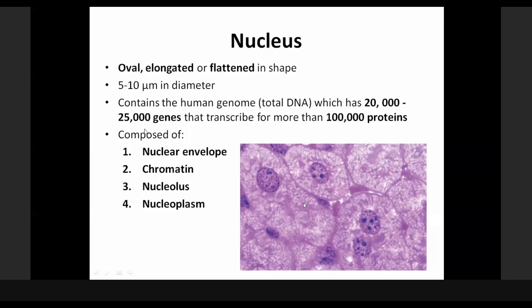In our nucleus, we have an estimated number of about 20,000 to 25,000 genes, made by a series of base pairs of DNA transcribing for more than 100,000 proteins. Because the nucleus contains so much DNA material coding for proteins, the nucleus is very important. Proteins are important because all enzymes regulating the activities of the cells are proteins. Proteins are also structural, are receptors, and there are many things that proteins do. So the nucleus is a very important part of the cell and can be seen very clearly in well-prepared specimens.